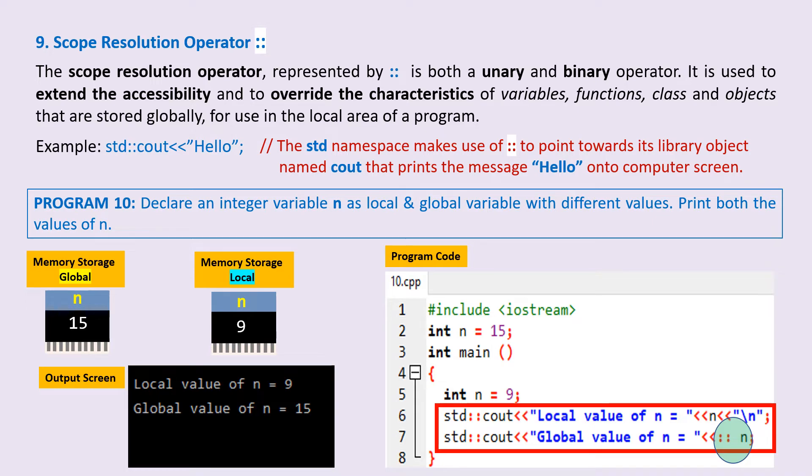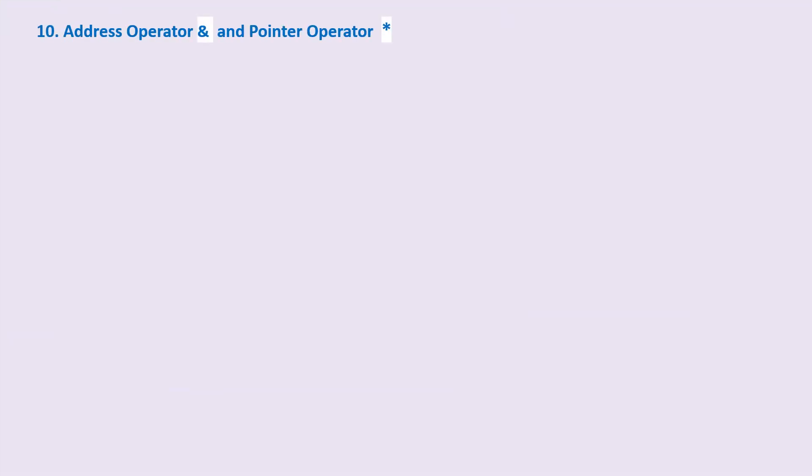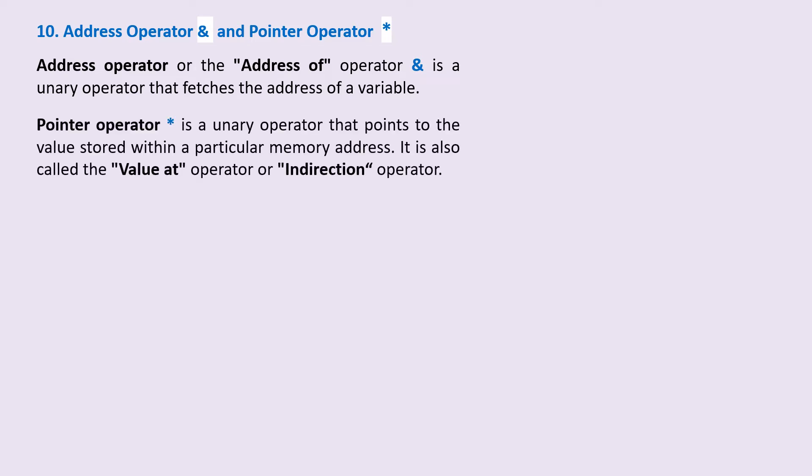Let's move over to the next major list of operators: the address operator ampersand and the pointer operator asterisk. Address operator or the address of operator ampersand is a unary operator that fetches the address of a variable. Pointer operator asterisk is a unary operator that points to the value stored within a particular memory address. It is also called the value at operator or the indirection operator.